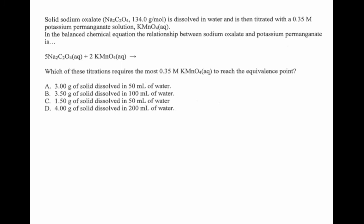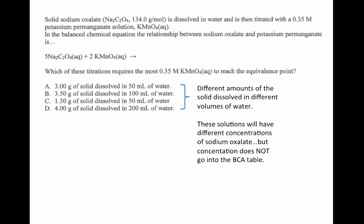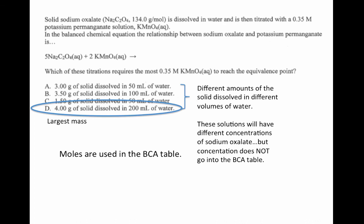Here's another exam question. Solid sodium oxalate is dissolved in water and titrated with potassium permanganate solution, with a balanced chemical equation given. The question asks which titration requires the most potassium permanganate to reach the equivalence point, with different amounts of solid and different amounts of water. Even though these have different concentrations of sodium oxalate, concentration does not go into the BCA table — the number of moles does. So we simply look for the one with the largest mass; that is the one requiring the most potassium permanganate.